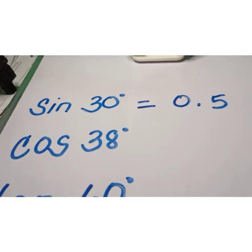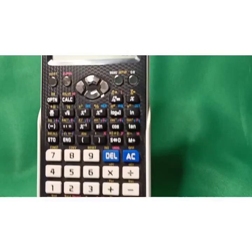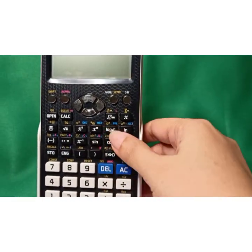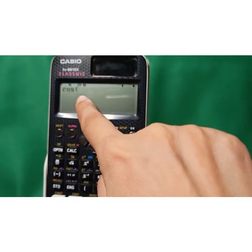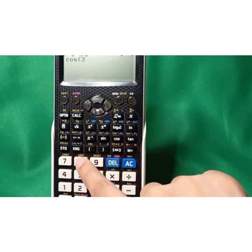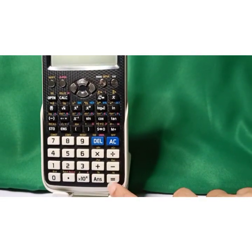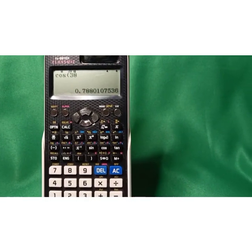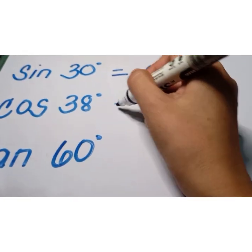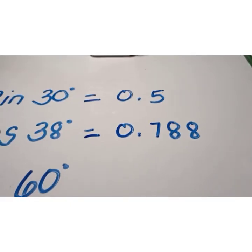Let us do the second one. We have cosine 38 degrees — please follow along using your calculator. Press AC, then press the cosine function. Check that cosine is indicated. Then press 38. Cosine 38 degrees — press the equal sign. We will get 0.788. So cosine 38 degrees has the value of 0.788.